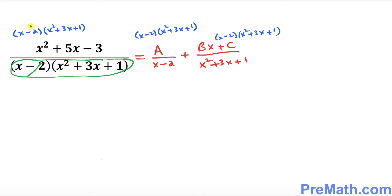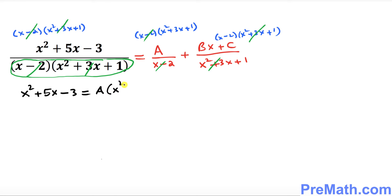After multiplying, the denominators cancel out on each term. So we end up with: x squared plus 5x minus 3 equals A times (x squared plus 3x plus 1) plus (Bx plus C) times (x minus 2).